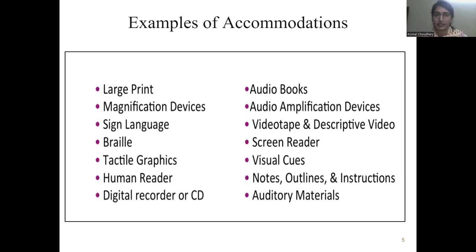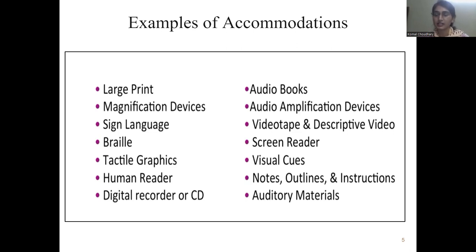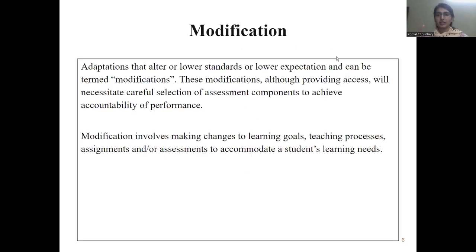We can provide tactile graphics, human readers, digital recorders or CDs — as seen in NCRT books. Screen readers, visual clues, extra notes, extra remedial classes, adapted instructions, adapted materials, and auditory materials are all examples of accommodations. In Accommodation, we just need to make learning flexible and provide everything the child requires, while keeping in mind that we are not going to alter or lower the curriculum standard.